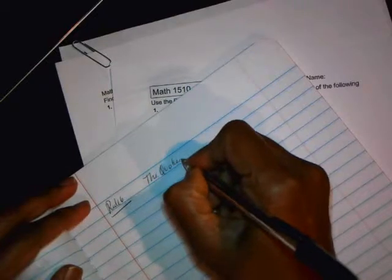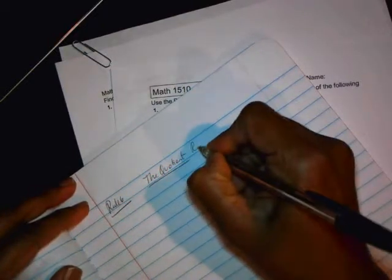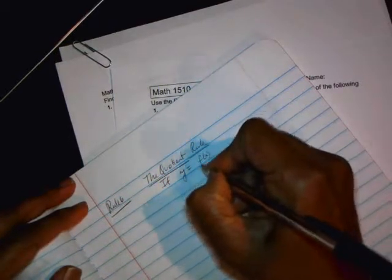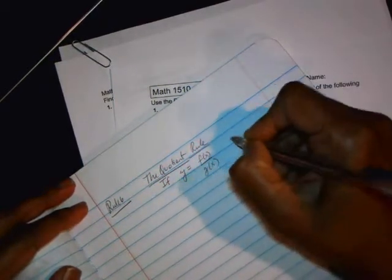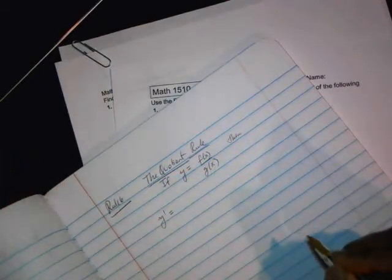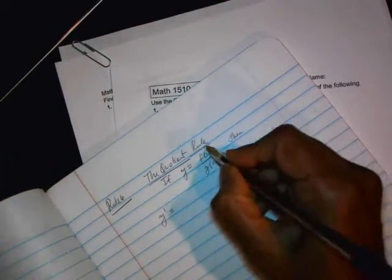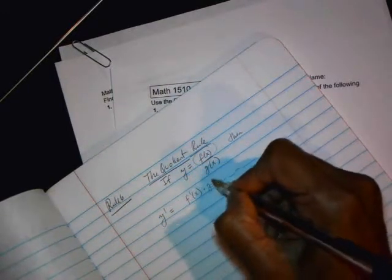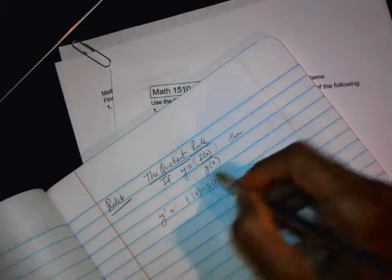states that if you have a quotient, that is, if y is equal to f of x divided by g of x, then y prime, it's a little bit more complicated than the product rule. You take the derivative of the top, f prime of x, and multiply it with g of x. So it's similar to the product rule.